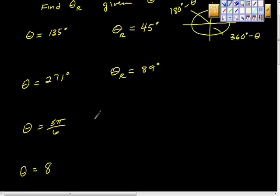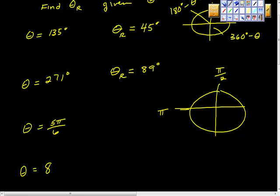5 pi over 6. Where is 5 pi sixths? Quadrant 2. How do we look at this? We know that this is pi halves, we know this is pi, so I'm going to convert to this denominator. So this is equivalent to 3 pi sixths, isn't it? This is equivalent to 6 pi sixths.